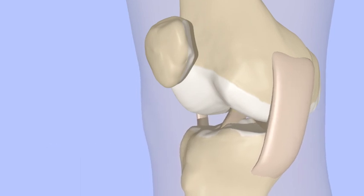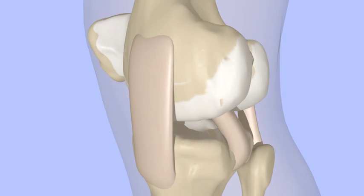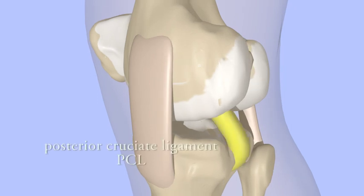The posterior cruciate ligament, or PCL, is located behind the ACL. It attaches from the notch of the femur to the back of the tibia. It keeps the tibia from gliding too far backward in relation to the femur.